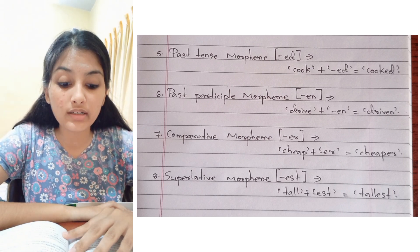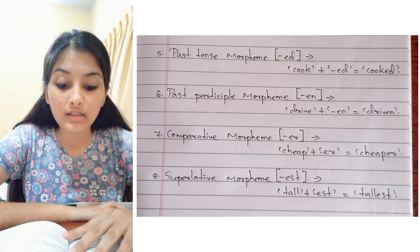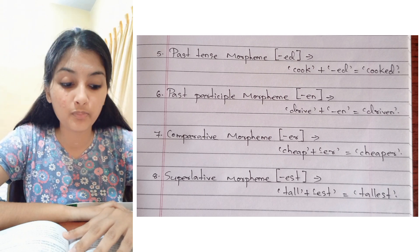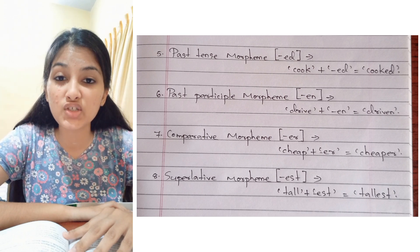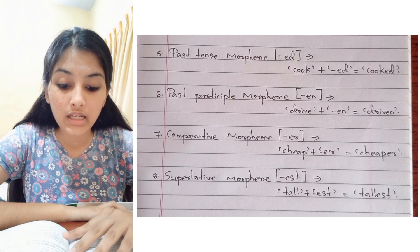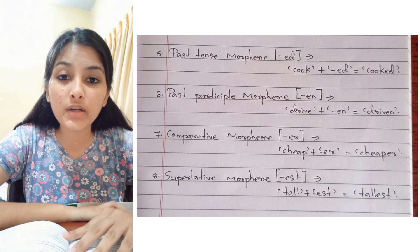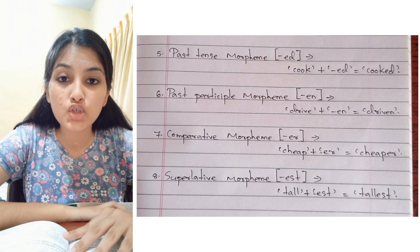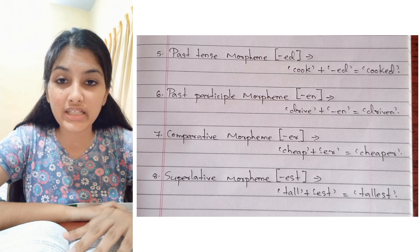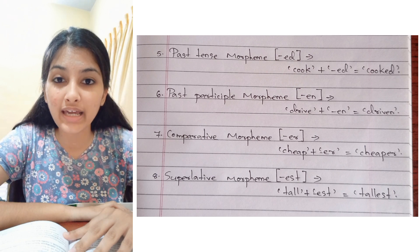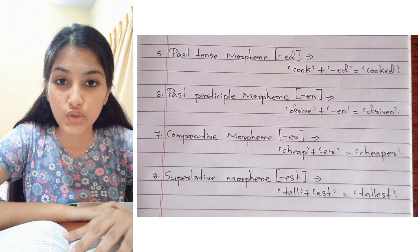The seventh is the comparative morpheme '-er': cheap + er = cheaper, as in 'These books are cheaper than those.' The eighth and last is the superlative morpheme '-est': tall + est = tallest, as in 'John is the tallest guy in his institution.'